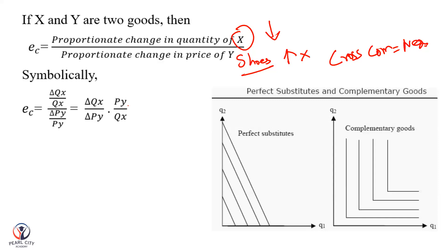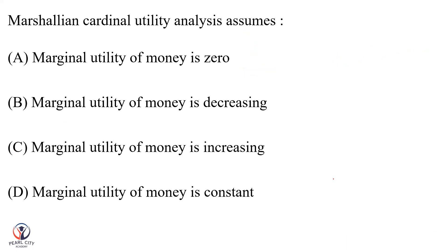For perfect substitute goods, the indifference curve will be a negatively sloping straight line. Whereas for complementary goods, it will be L-shaped. Complementary goods have an L-shaped indifference curve. An example from Marshall's Cardinal Utility Analysis.